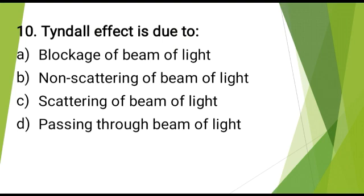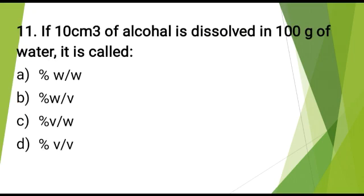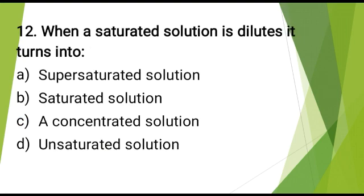Tyndall effect is shown by? The correct answer is: jelly. Tyndall effect is due to? The correct answer is: scattering of beam of light. If 10 cm³ of alcohol is dissolved in 100 g of water, it is called? The correct answer is: % V by W. When a saturated solution is diluted, it is turned into? The correct answer is: unsaturated solution.